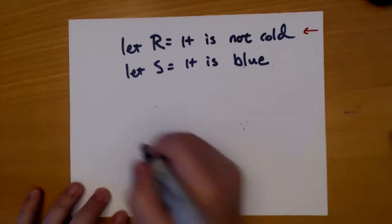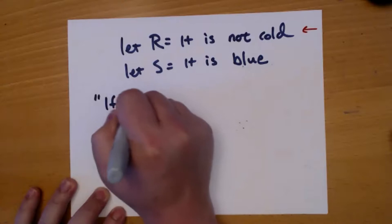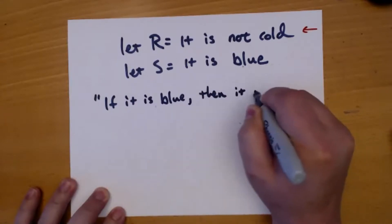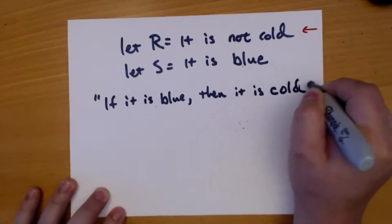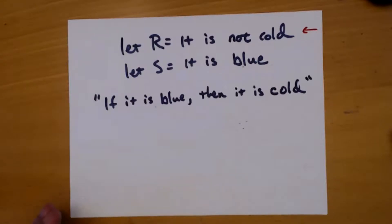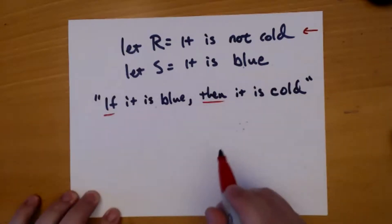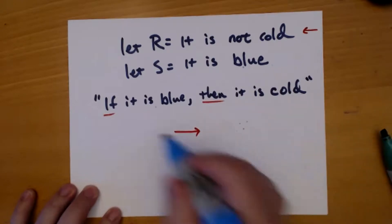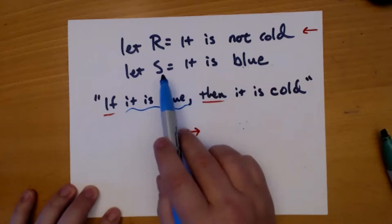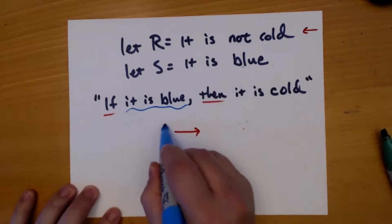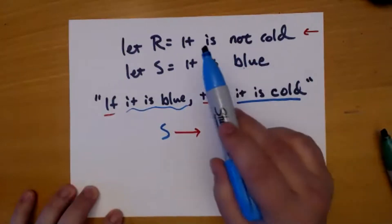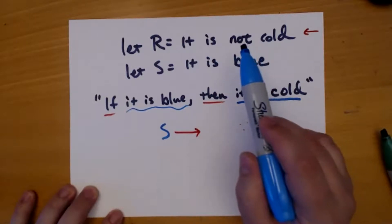Let's talk about this. I've got my if-then, so that's my arrow. Now, 'if it is blue' — I've got 'it is blue' already as S, no changes, normal, so I just write S. Now I want 'it is cold,' but I go up to my definitions and I've got a sentence that says 'it is NOT cold.' So how am I going to turn a not-cold into just cold?